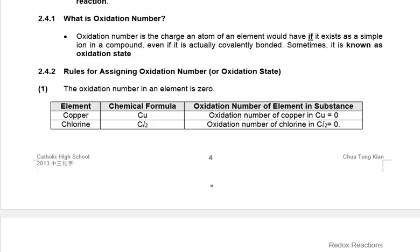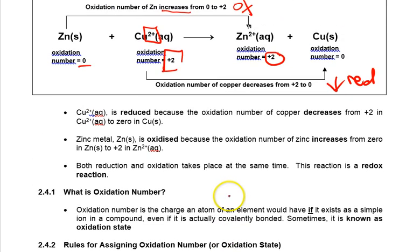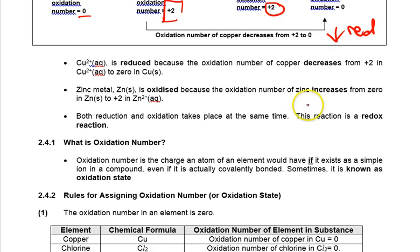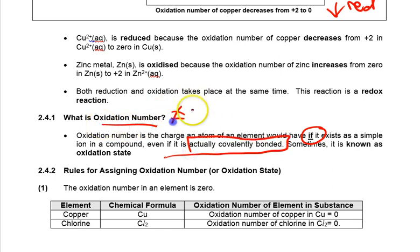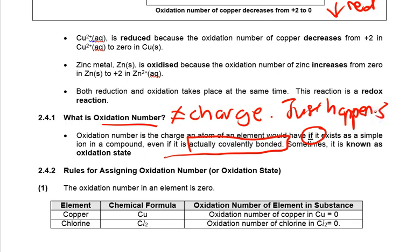The oxidation number is the charge of an atom if it exists as a simple ion in a compound, even if it is actually covalently bonded. Take note: the oxidation number is not equal to the charge. It just happens to match the charge for certain ions. This is very important — it is not the charge; it just happens to coincide with the charge in certain cases.